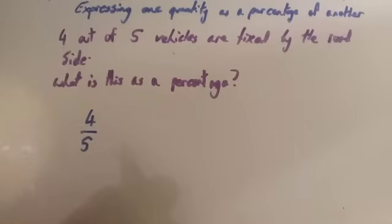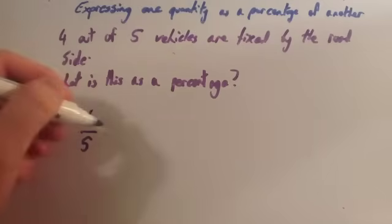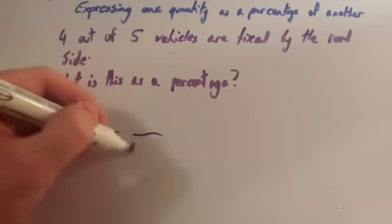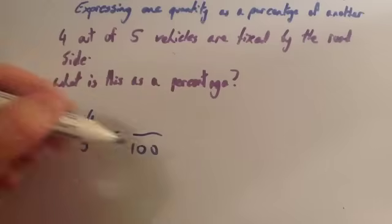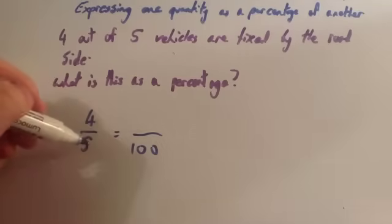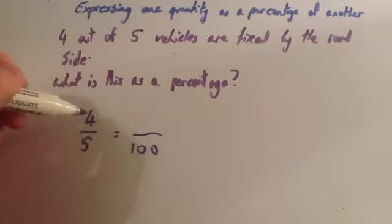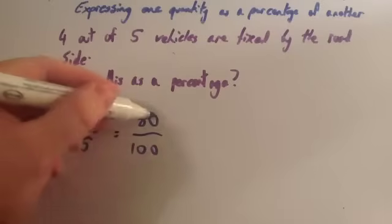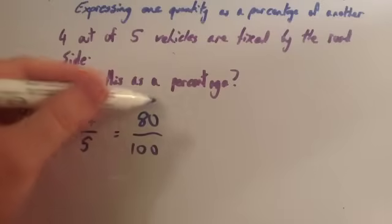If you know four-fifths as a percentage by looking at fractions, decimals, and percentages, or equivalent fractions, decimals, and percentages, then you can just write this straight away. Otherwise, let's convert it. We want it as a percentage — remember, percent means we want 100 on the bottom line. To get four-fifths, we want to get the five to become 100. We multiply five by 20 to make it 100, because five times 20 is 100. So we need to multiply the top of the fraction by 20 as well. 20 times 4 is 80, so this would be 80 out of 100 — that would be 80%.